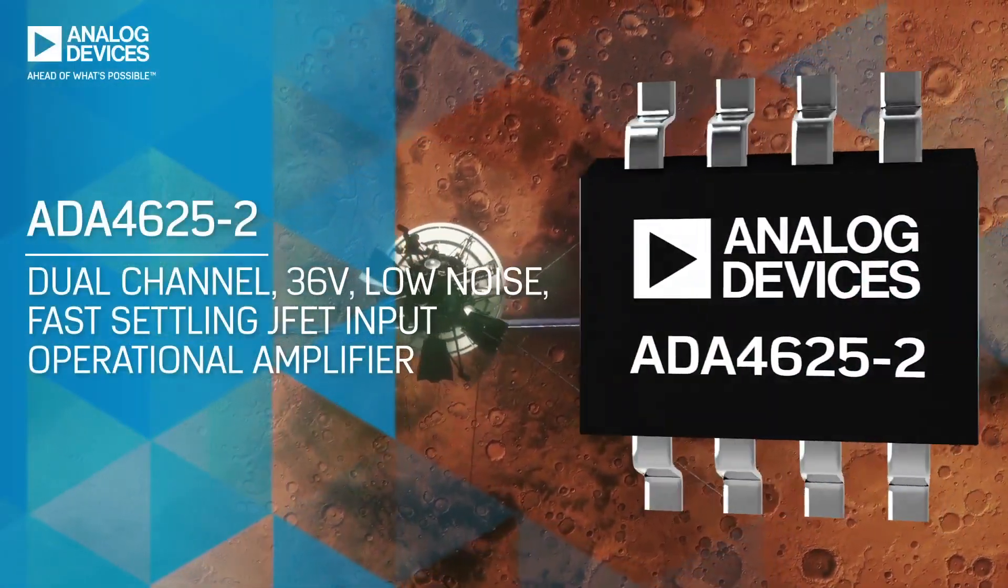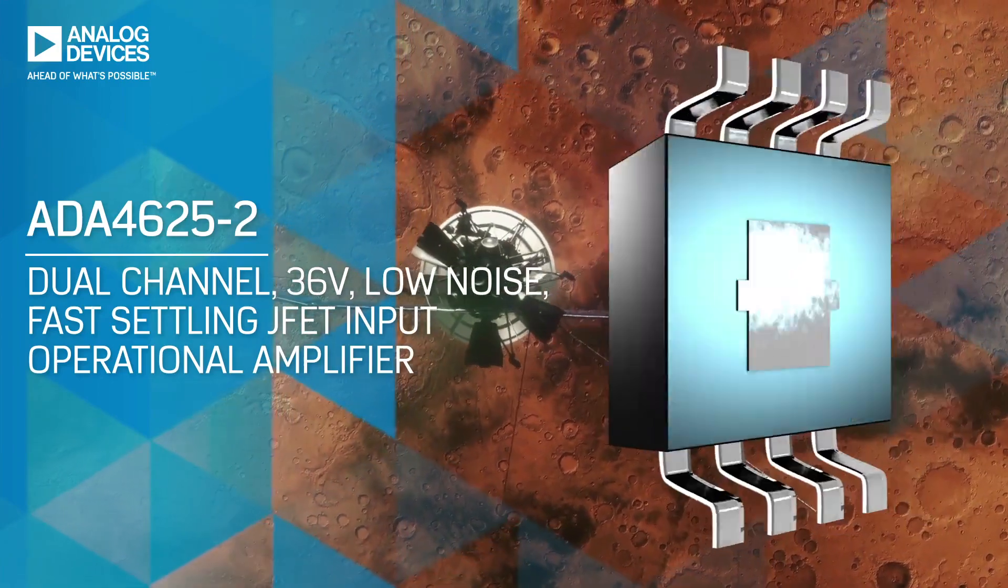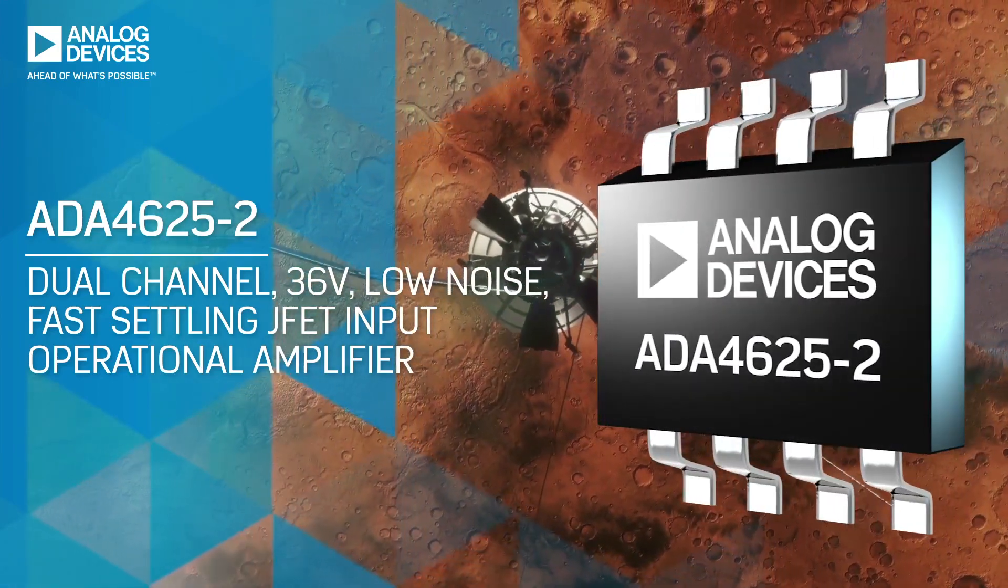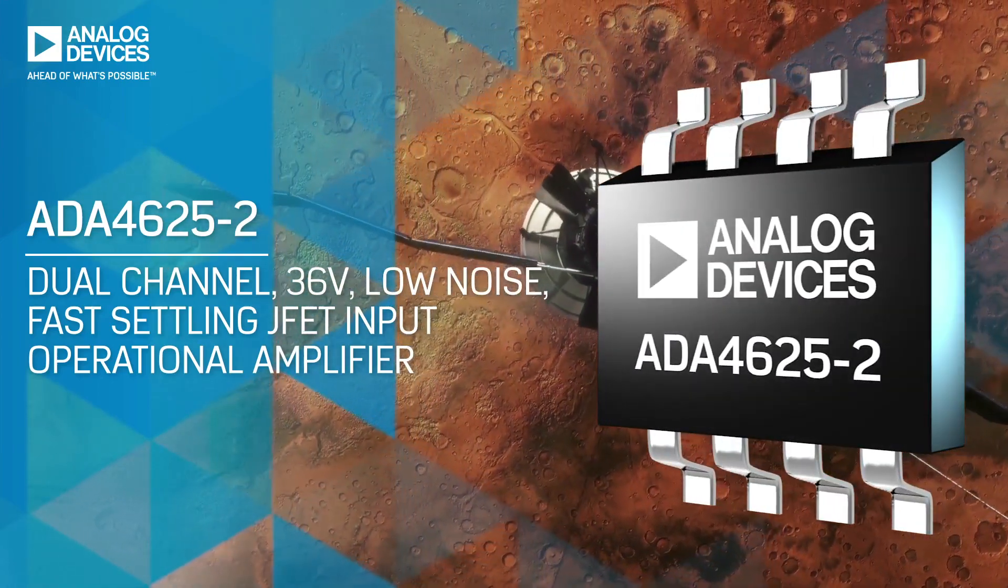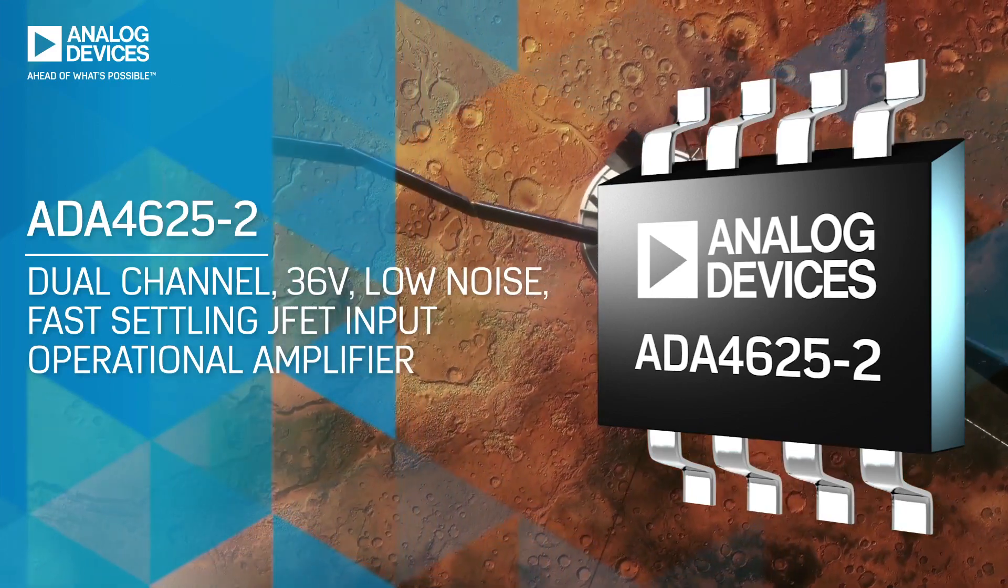The ADA4625-2 is a dual channel 36 volt low noise fast settling JFET input op amp optimized for PLL active filter amplifiers.